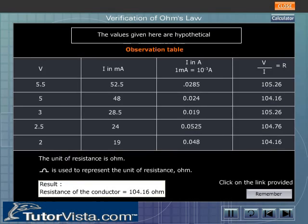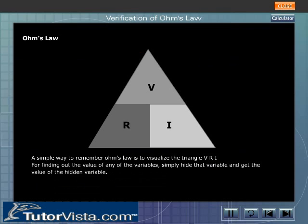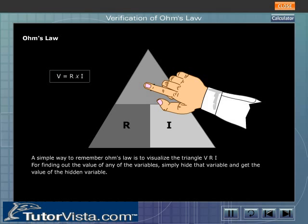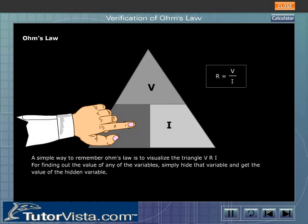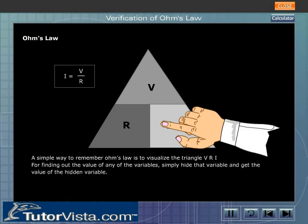A simple way to remember Ohm's Law is to visualize the triangle with V, R, and I. For finding the value of any of the variables, simply hide that variable to get its value. When we hide V, we get R times I, hence V equals R times I. Similarly, if we hide R, we get R equals V divided by I. And if I is hidden, we get I equals V divided by R.